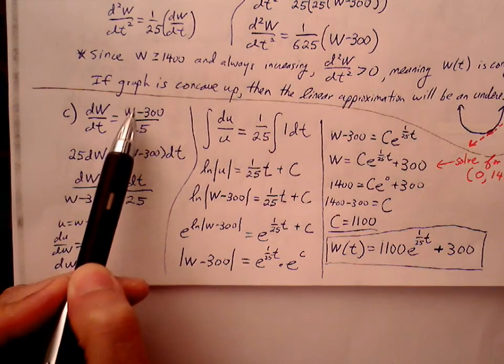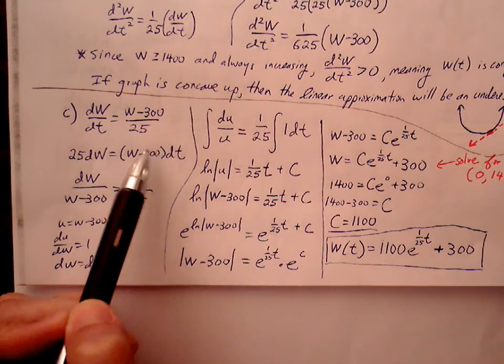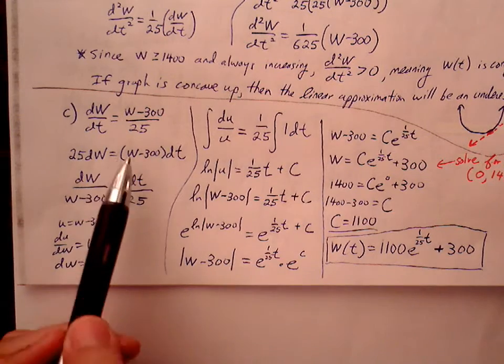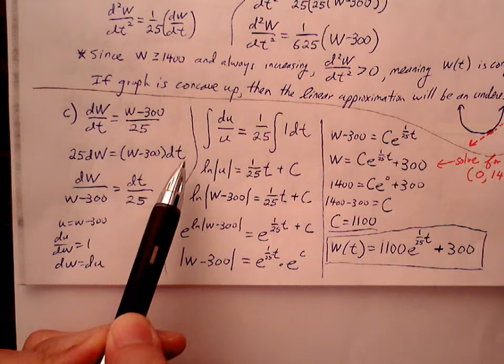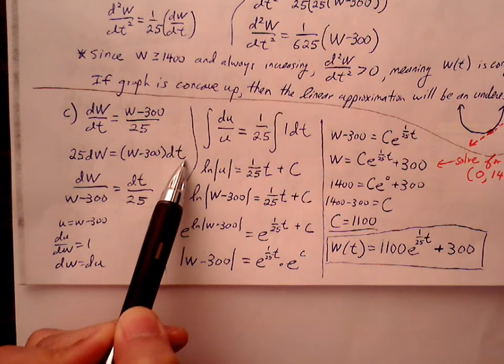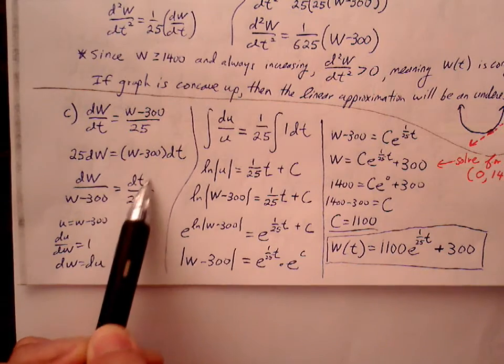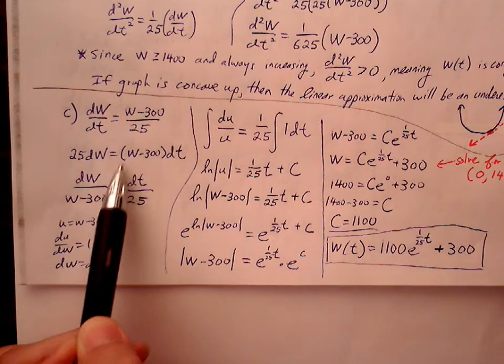So dW/dt equals (W - 300)/25. Here's my cross multiplication. I get 25dW is equal to (W - 300) times dt. So now let's look. We want all the dependent variable values on the left side. All the independent variable involving with t and any coefficients, let's go ahead and put on the right side.